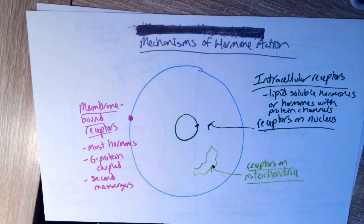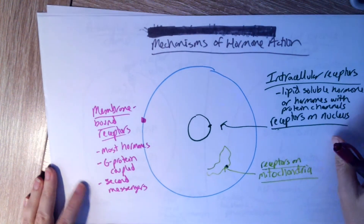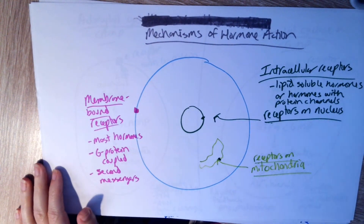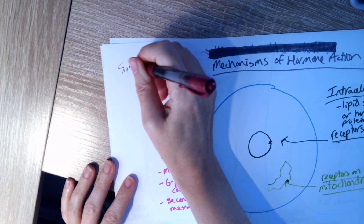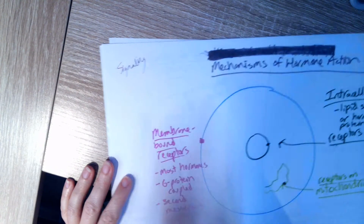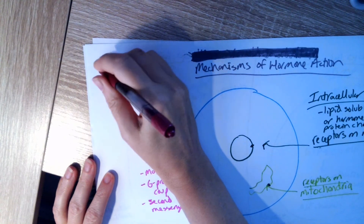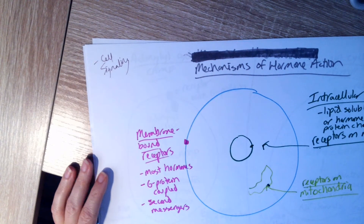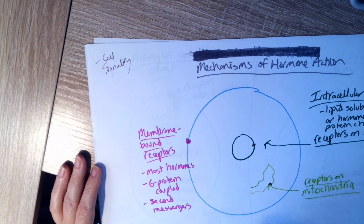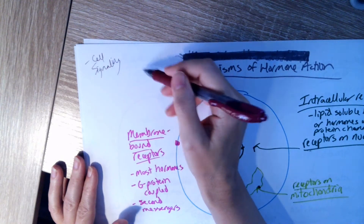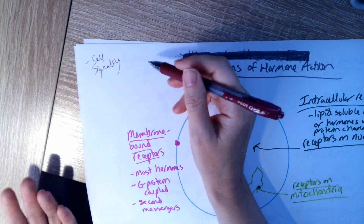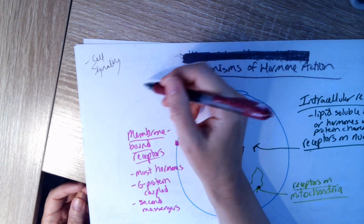Starting on our endocrine system. The endocrine system is talking about things that go into the blood — chemicals called hormones — and they go into the blood and travel around the body and act on target cells. This is a form of cell signaling, which you've seen other forms of in ANP1 with neurons, where one neuron communicates with another neuron or with a muscle.